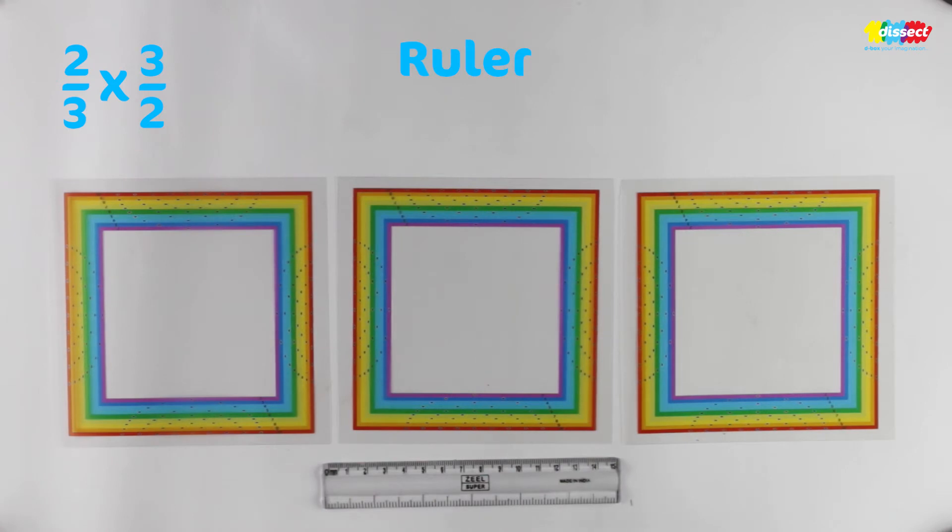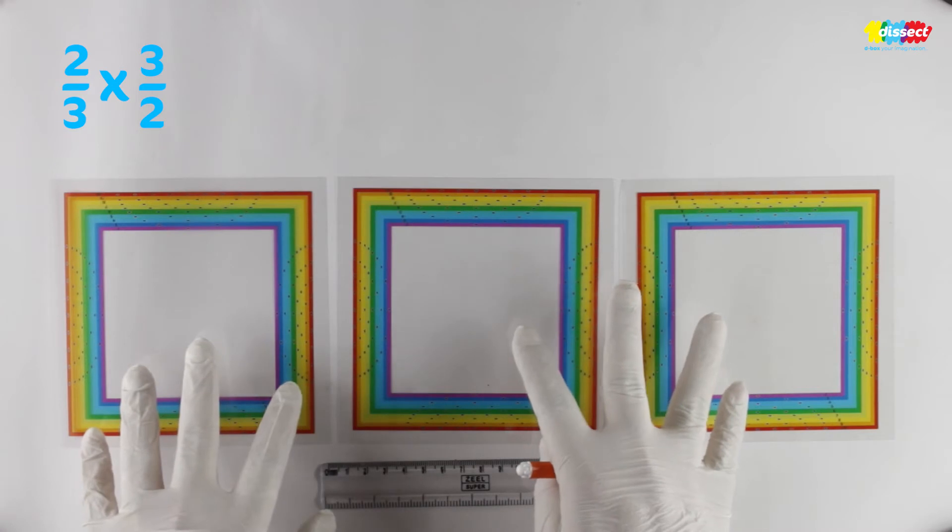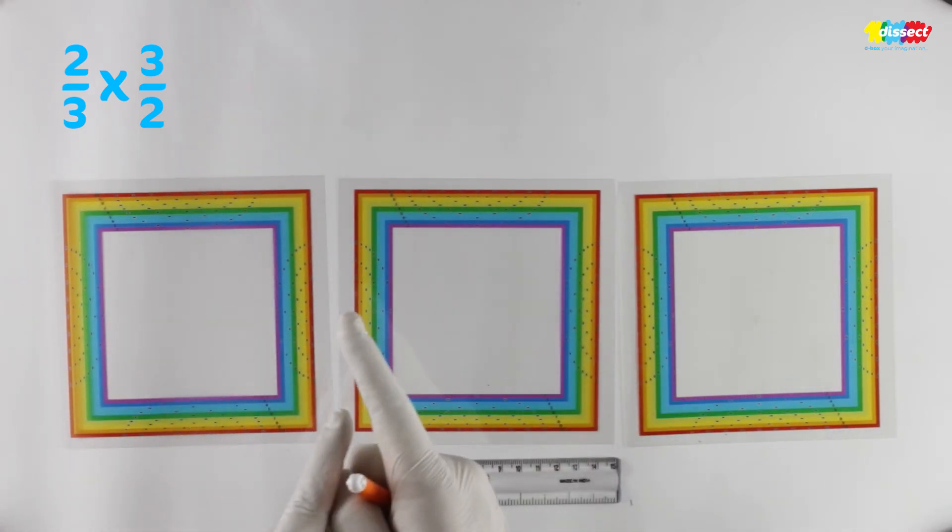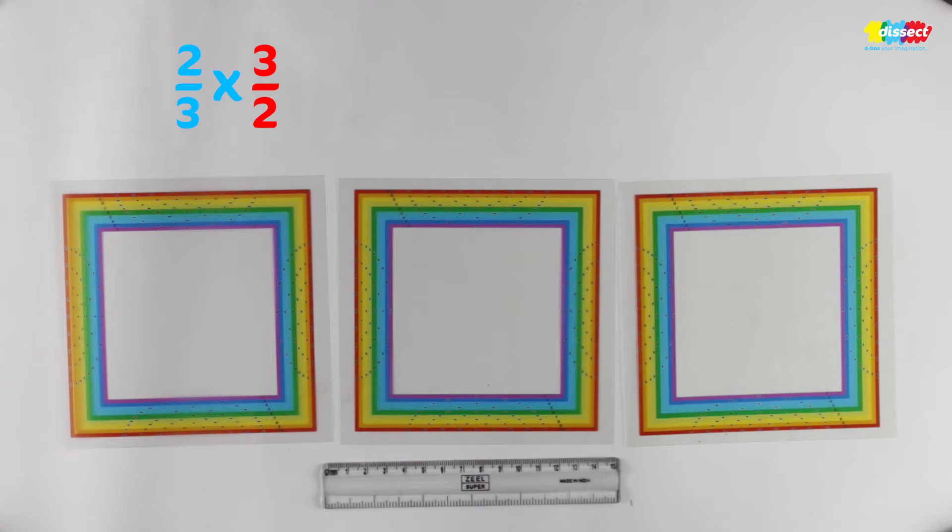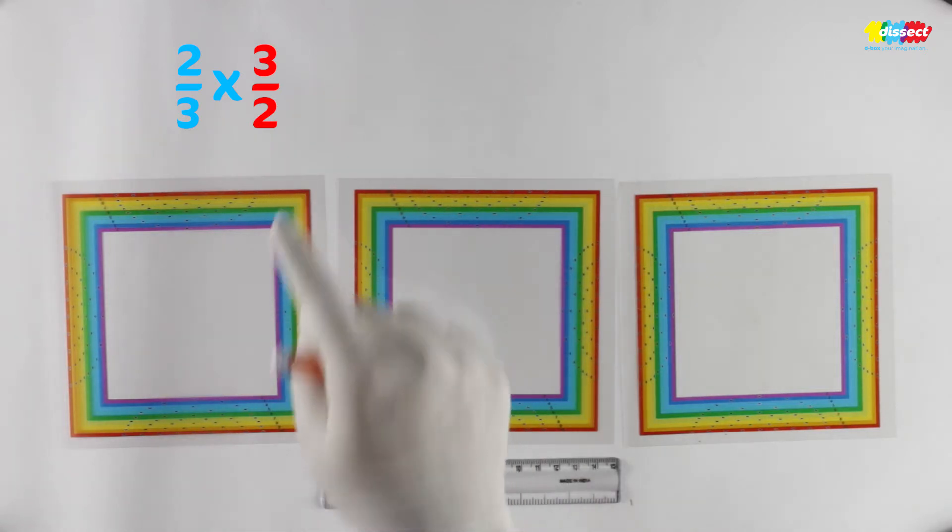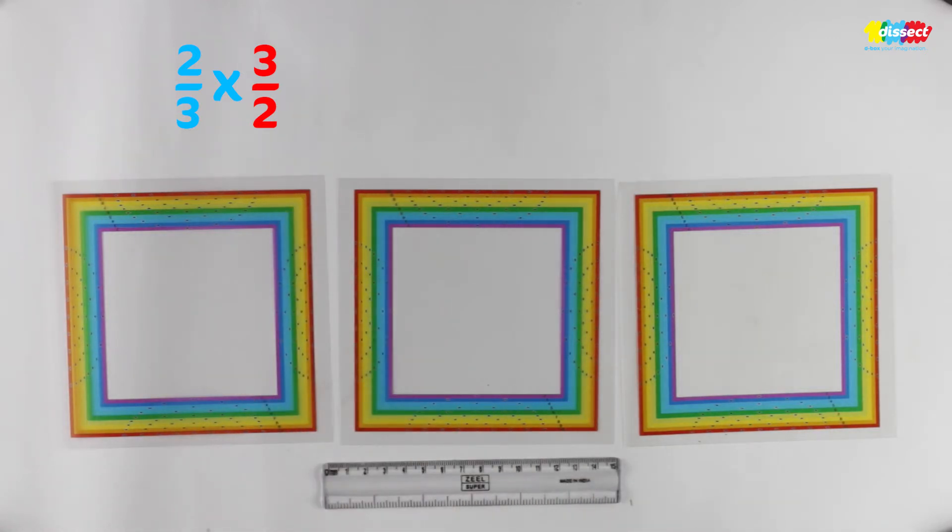Now before we start doing the multiplication equation using the fraction transparency we need to actually understand that 3 upon 2. What that 3 upon 2 means is there is a 2 upon 2 inside it and there is also a 1 upon 2. So we can split the 3 upon 2 into 2 pieces: 2 upon 2 and 1 upon 2.